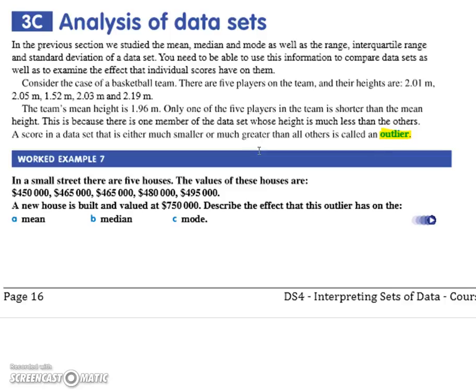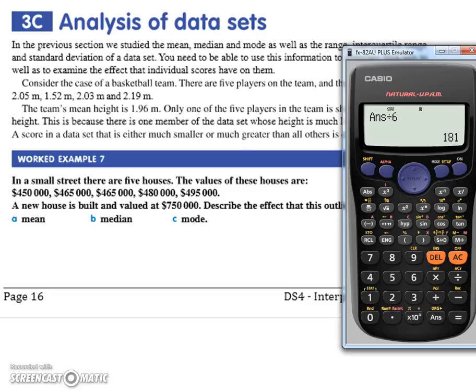Now I'm asking you guys, what do you have to do to find the median? Yeah, that's how you find the mean. So you want to find the mean of those ones. Okay, the outlier is that 750,000 that they're wanting us to add.